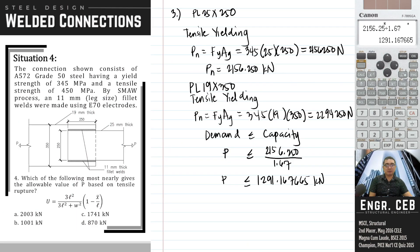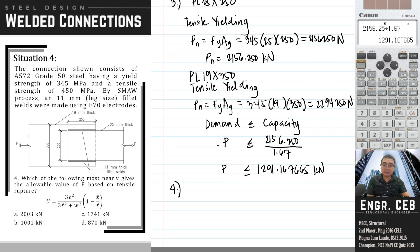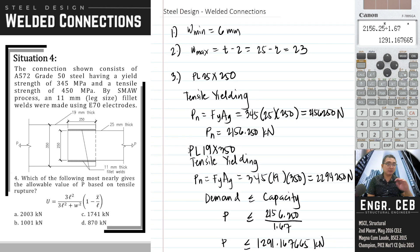Next, number 4. Which of the following most nearly gives the allowable value of P based on tensile rupture? Since the welds are longitudinal, this is case 4 for shear lag factor. I've included the equation for the shear lag factor to use. We have to solve twice, once for each plate.